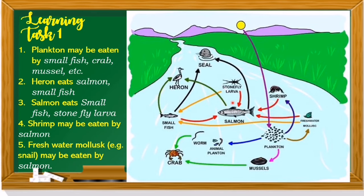For number 3, the salmon fish eats small fish and stonefly larvae. For number 4, shrimp may be eaten by salmon. For number 5, freshwater mollusk — for example, snail — may be eaten by salmon. The salmon eats the snail. That's it for learning task number 1. Hope you understand this illustration.